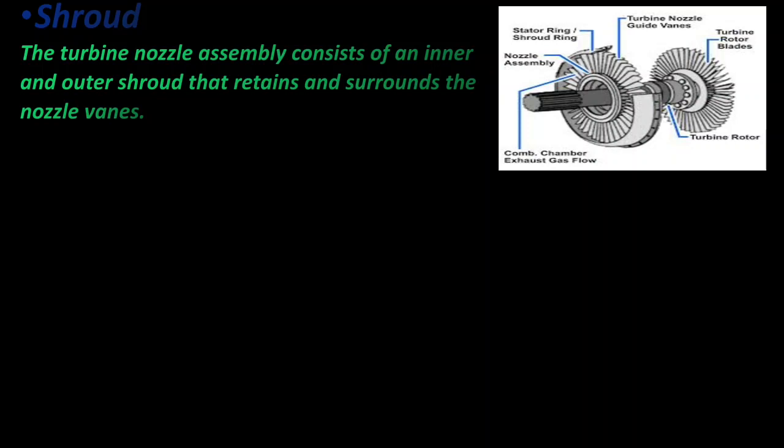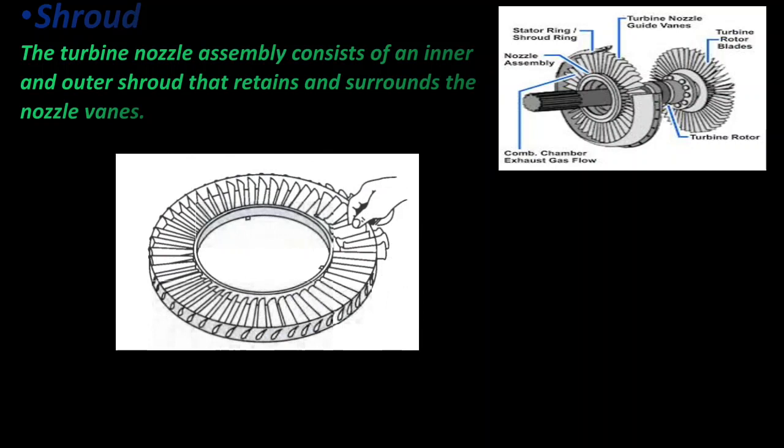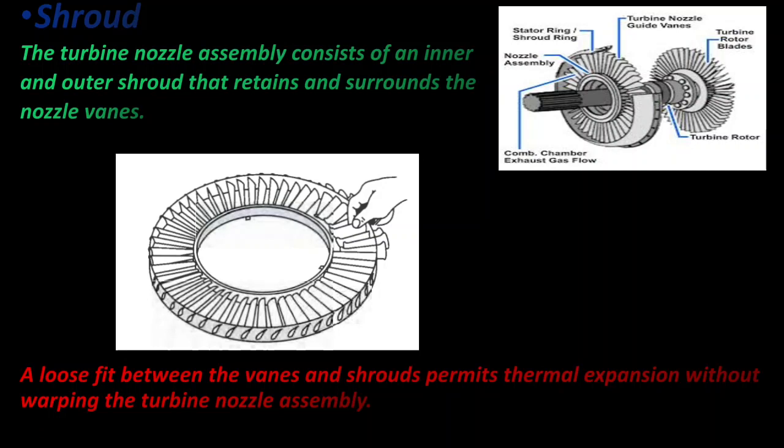One aspect is common to all turbine nozzles: the turbine nozzle vanes are constructed to permit thermal expansion. One way that designers address the thermal expansion of turbine nozzle is to assemble them loosely within the inner and outer shroud. The shrouds are built with a series of contoured slots designed to accommodate the shape of an individual vane. The slots are slightly larger than the vanes to provide a loose fit. Now you can see here in this picture a loose fit between the vanes and the shroud permits thermal expansion without warping of the turbine nozzle assembly.